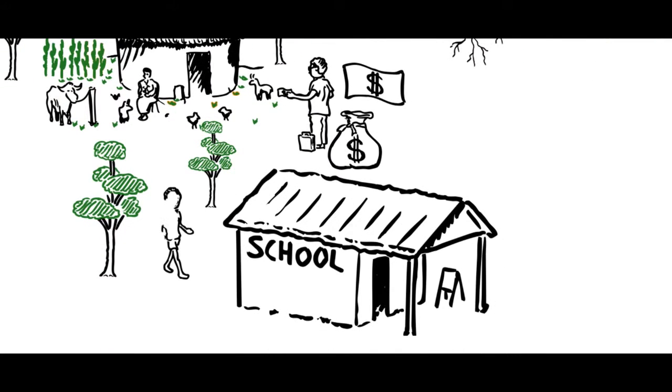Children's education is fundamental to overcome poverty and corruption. Better Globe builds schools in collaboration with Child Africa.